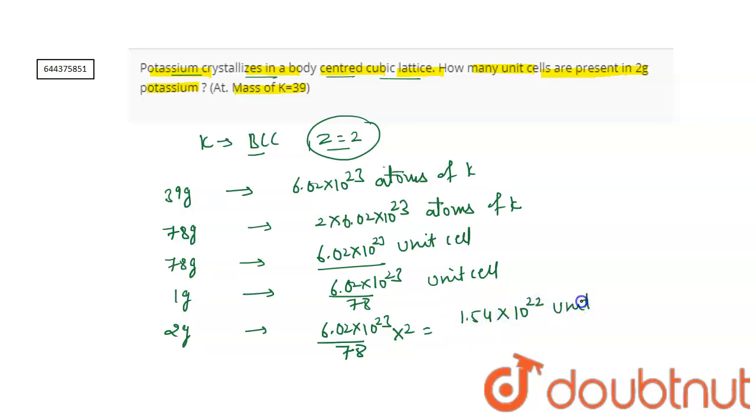Means 2 grams of potassium is present in 1.54×10^22 unit cells. Thank you.